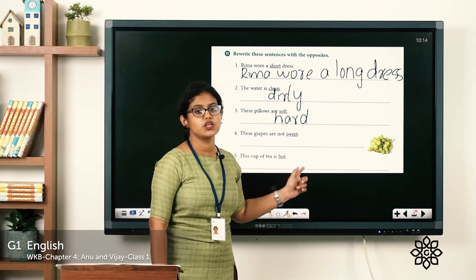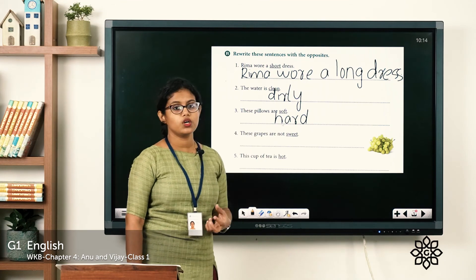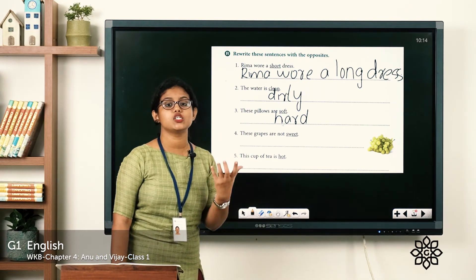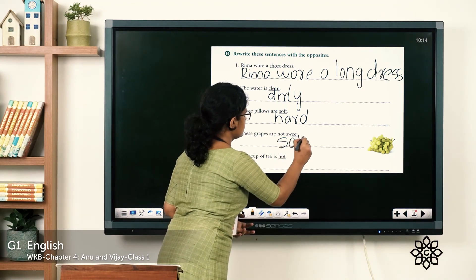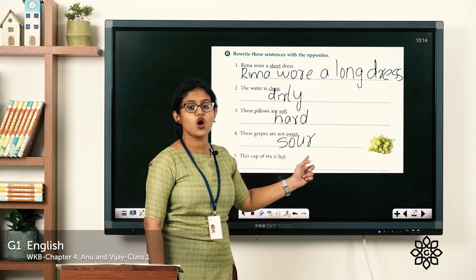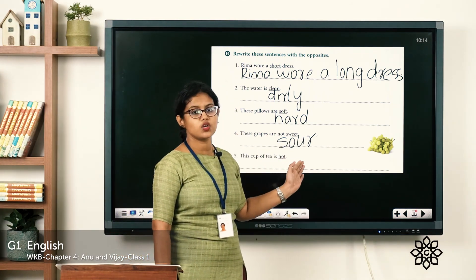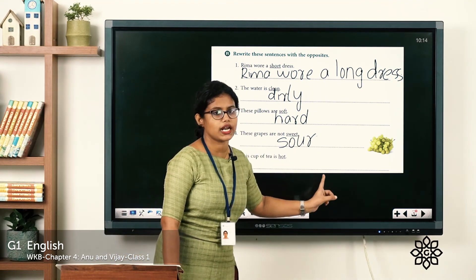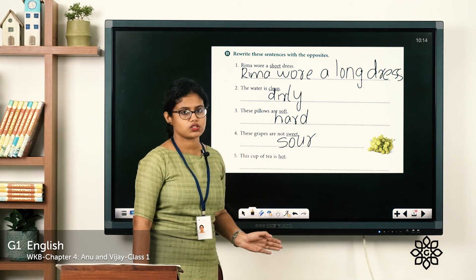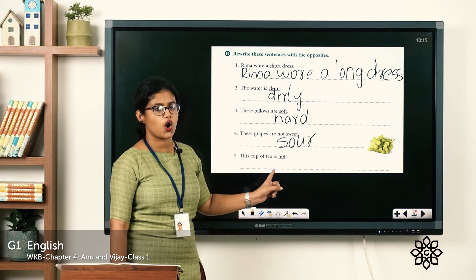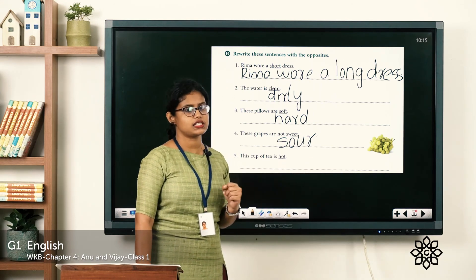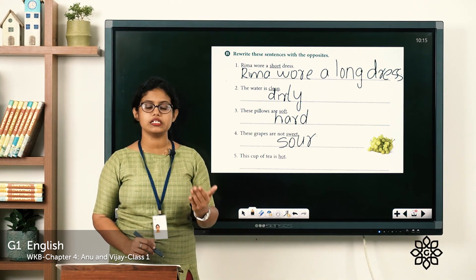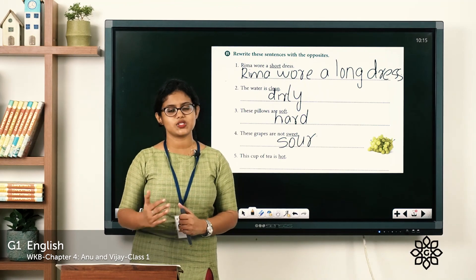Next one: 'These grapes are not sweet.' The word sweet is underlined. The opposite word for sweet is sour. So you have to write it as 'These grapes are not sour.' What about the fifth one? 'This cup of tea is hot.' The word hot is underlined and you have to find the opposite word for hot and rewrite the sentence — this you have to do by yourself. We have discussed some of the exercises; in the coming classes we'll discuss the remaining exercises. We'll meet in the next class — thank you.